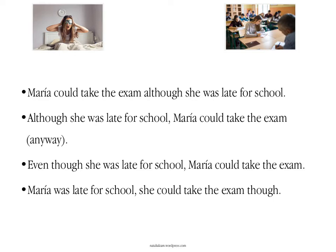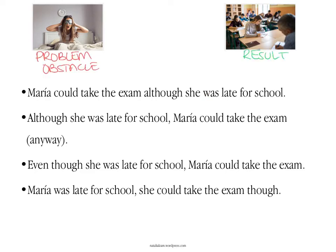Here's a situation. This girl, let's call her Maria — she was late. She got up really late, so she was late for school. It might have been a problem because she had an exam, but apparently it wasn't because she could take the exam. So you could say: although she was late for school — that's the obstacle — Maria could take the exam. Or you can swap the order: Maria could take the exam although she was late for school.